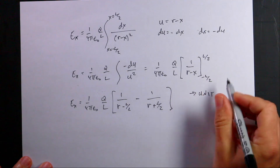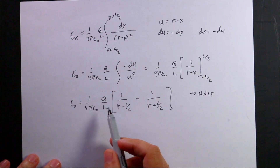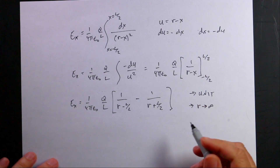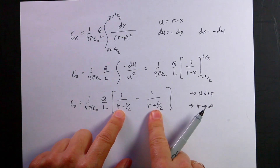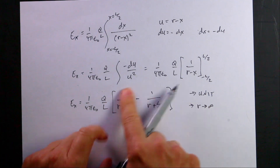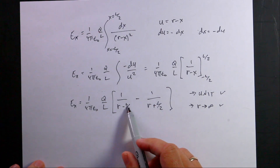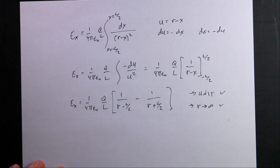For the limit as L goes to zero, the rod should look like a point charge. You'd have to do some algebra to show it, so I'm not going to check that one. Instead, I'm going to build a numerical model to verify this equation.